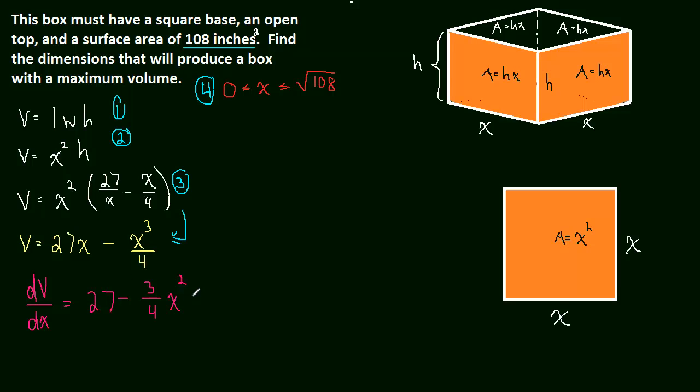Now to find the critical numbers, we just set the derivative equal to zero and solve. So 27 = (3/4)x². Times by 4, this is 108. 108 = 3x², so we just multiplied both sides by 4. Divide by 3 and this becomes 36 = x². So x = ±6. Well, we know x can't be negative. That doesn't make any sense to have a negative length and it's not part of our domain. So x = 6 is our only critical number.